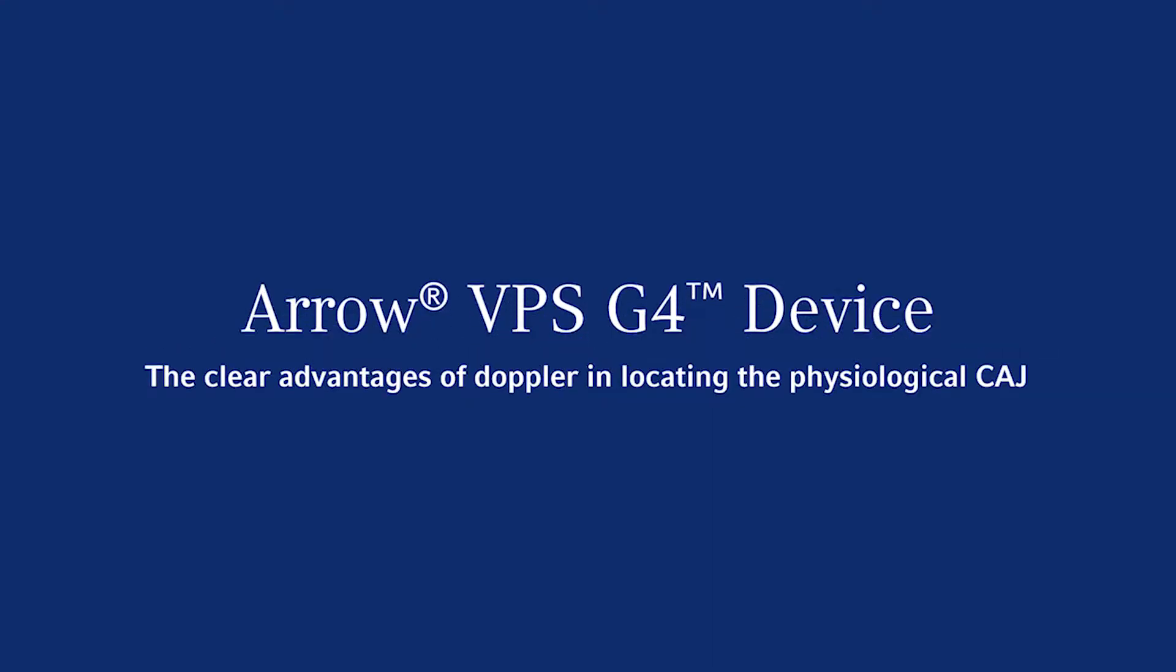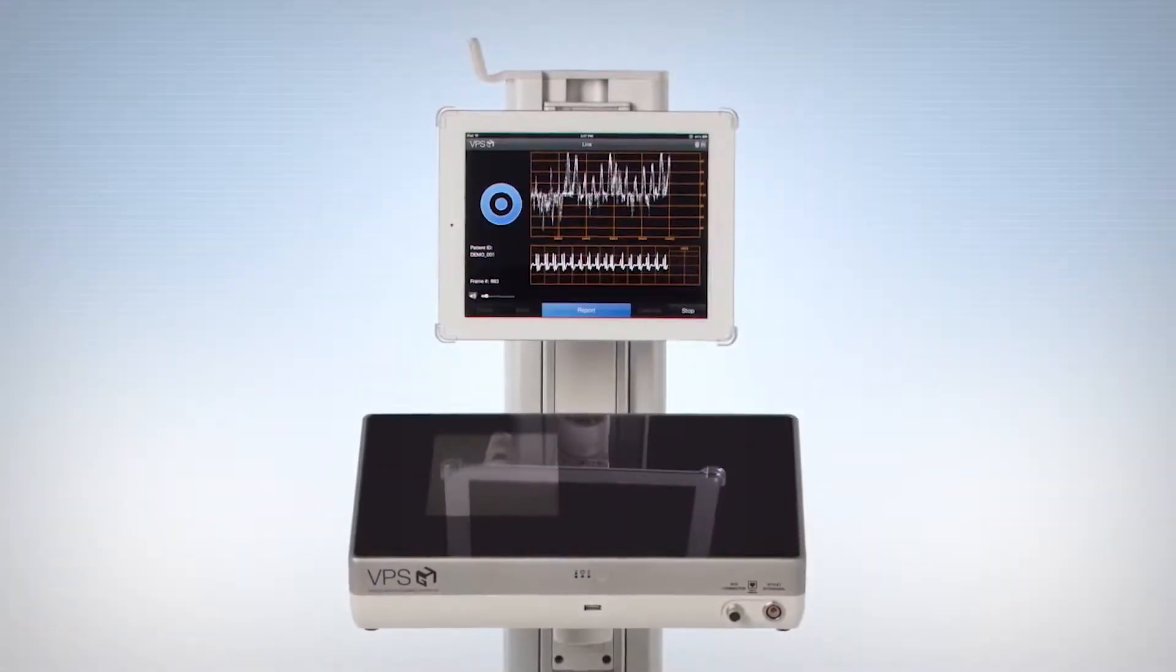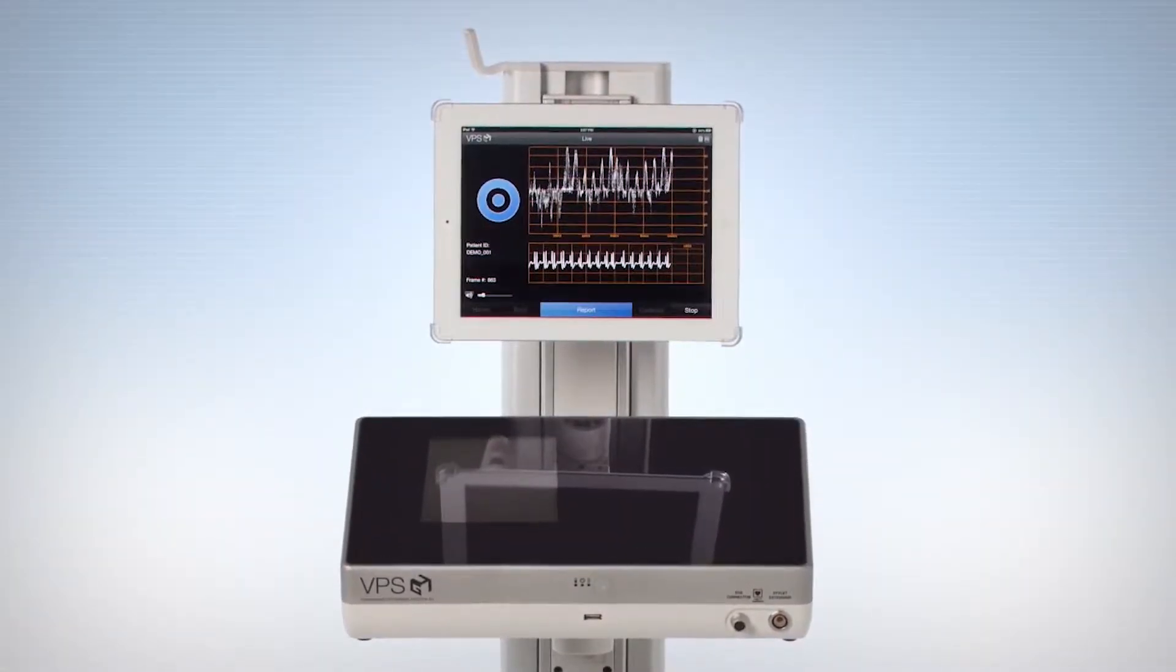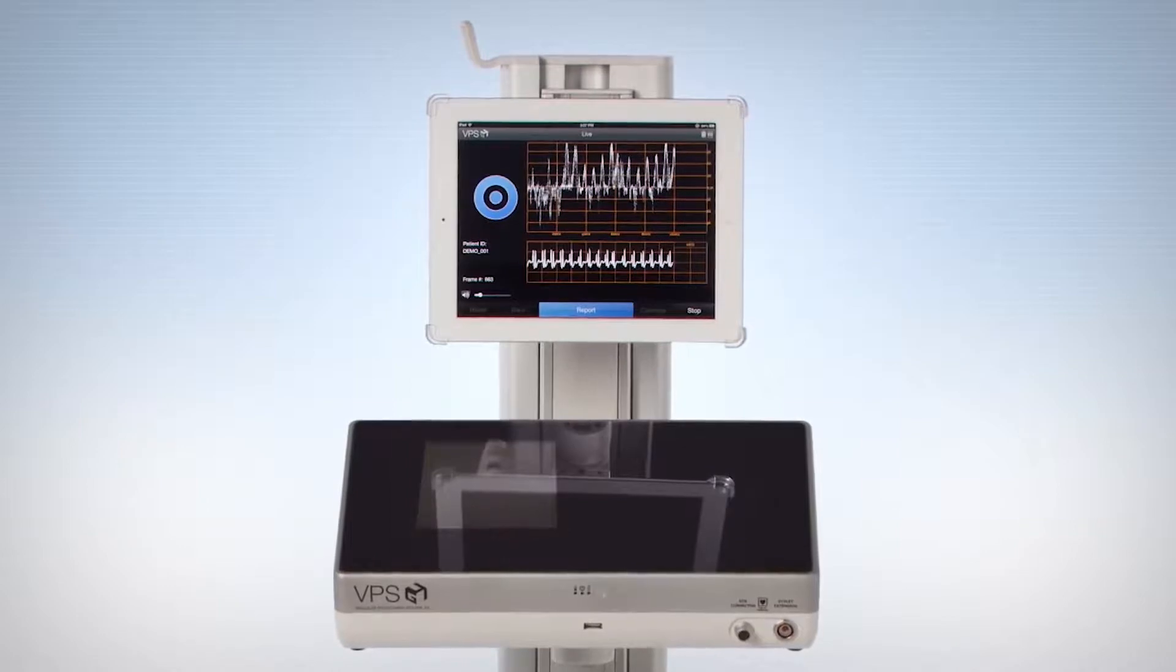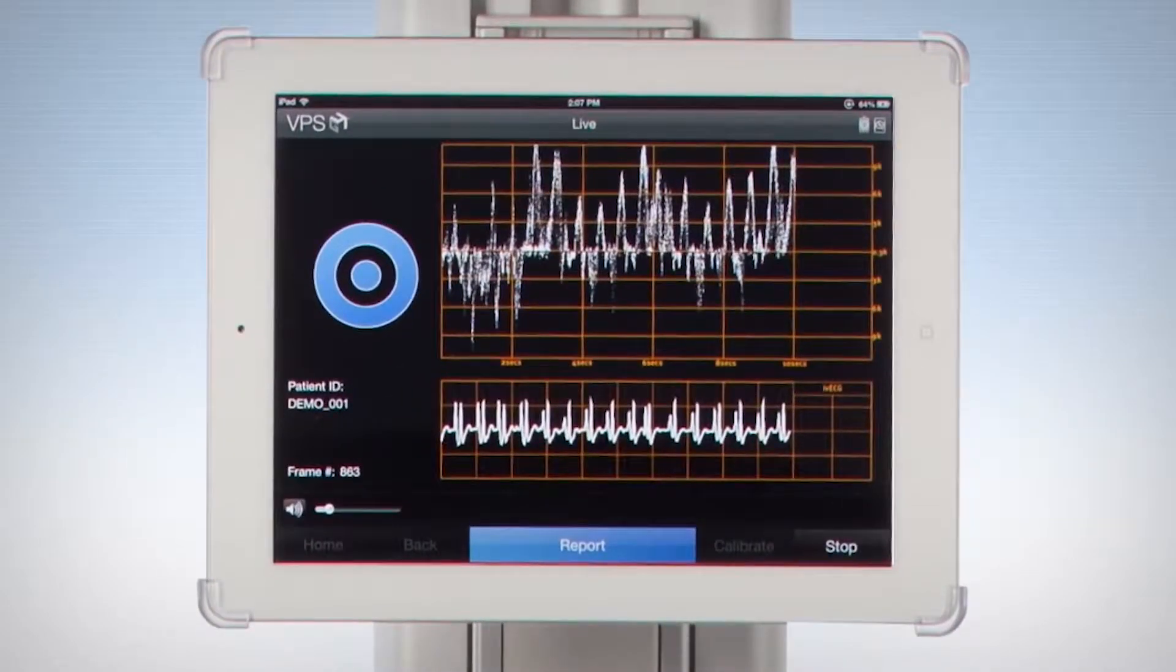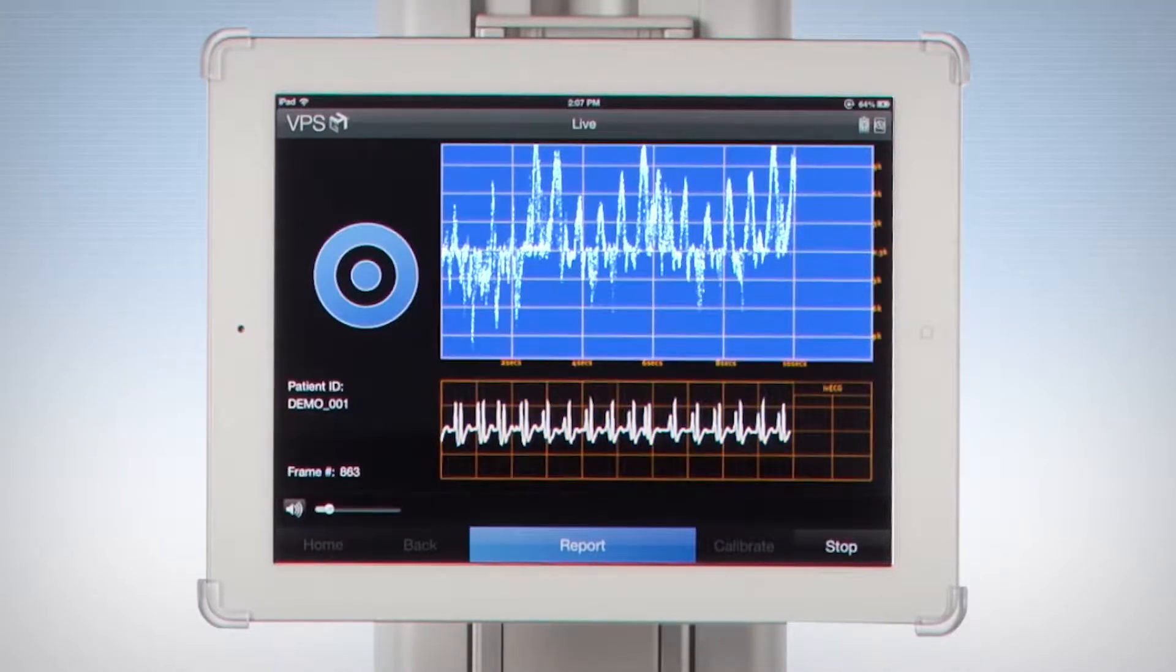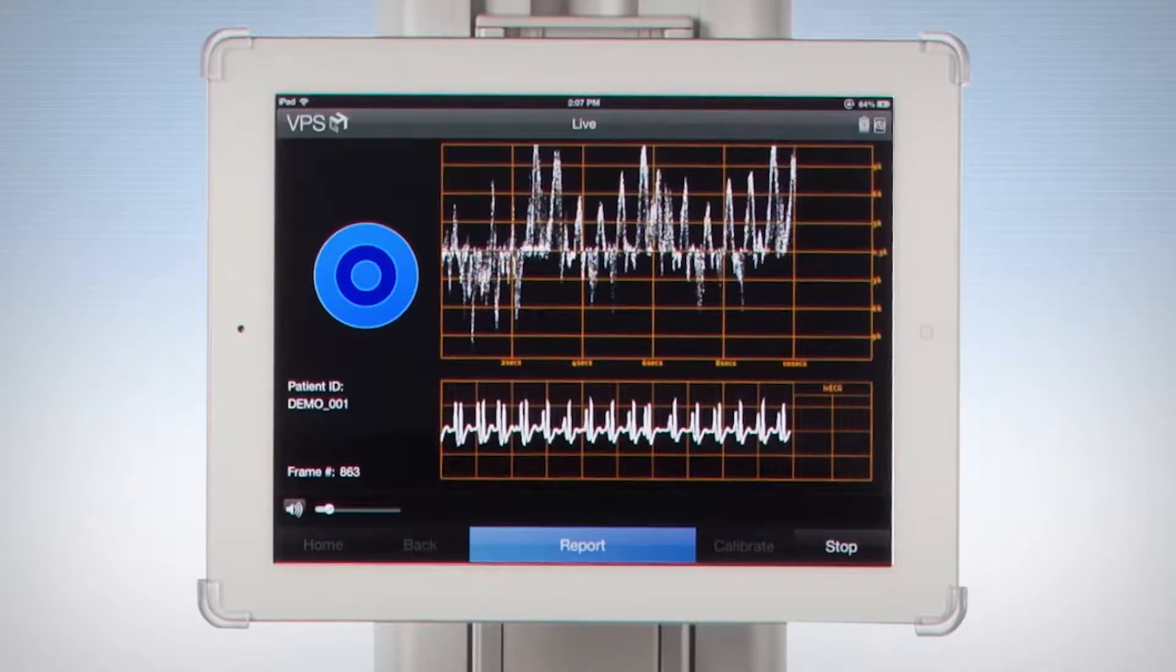With the Arrow VPS G4 Vascular Positioning System, clinicians have the opportunity to avoid unexpected complications common with central line insertion. The Arrow VPS G4 device is intended for use in the insertion of central venous access catheters in adult patients. This unique product innovation utilizes a three vector technology which includes intravascular ECG, Doppler ultrasound, and a physiologic algorithm.